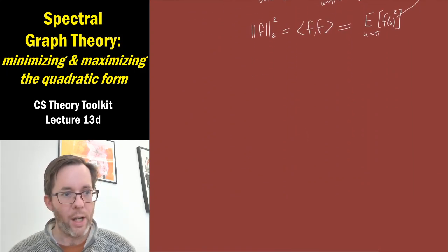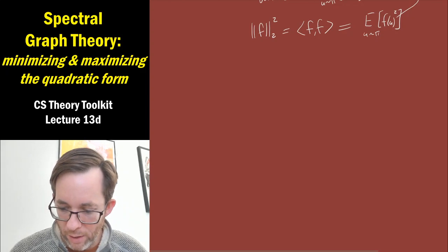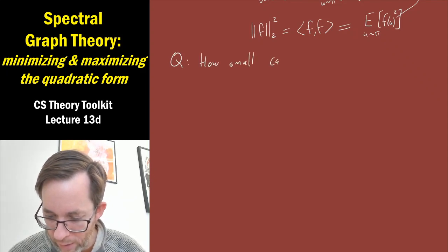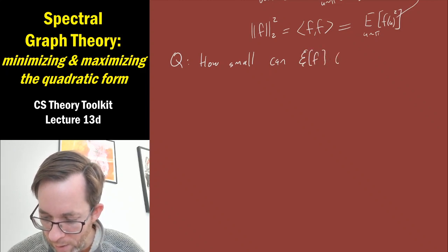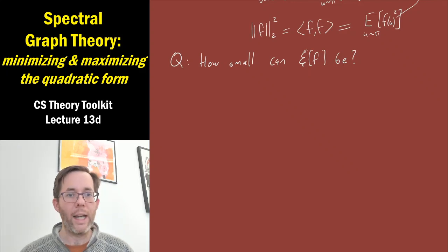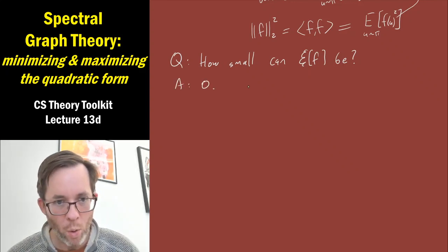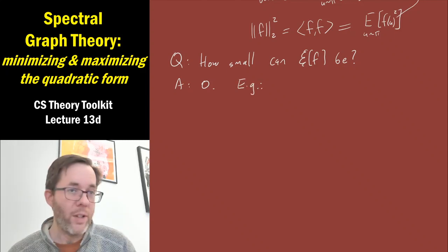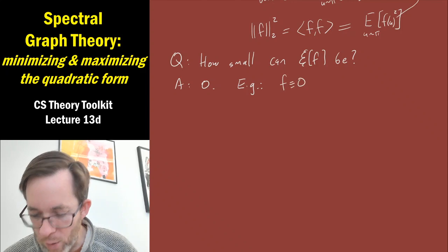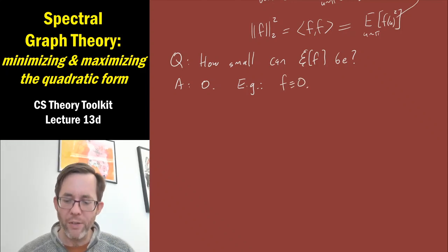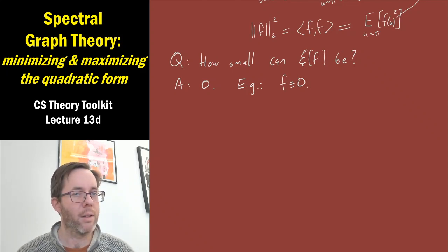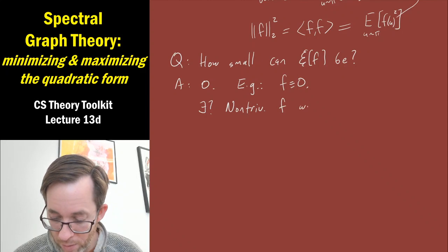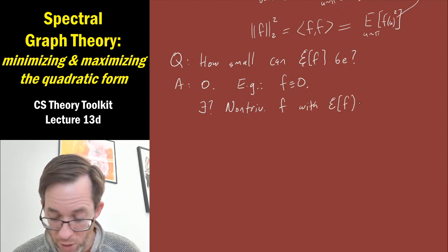Let's address the question: how small can the quadratic form be? It's a non-negative quantity and can be zero, so the answer is zero. But the question is, when is it zero? One obvious case is if f itself is constantly zero. But can there be some non-trivial f that makes the quadratic form zero? The answer is potentially yes.